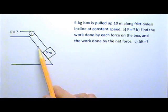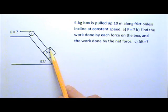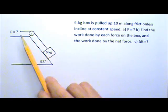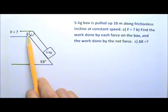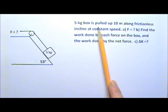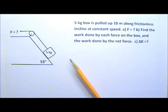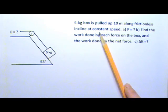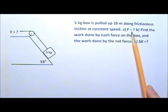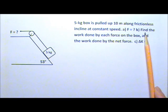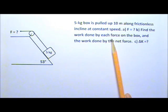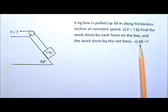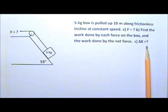In this problem we have a 53-degree incline and a 5 kg box attached to a string. The string goes over a pulley and there's a horizontal force pulling on the string. The 5 kg box is pulled up the frictionless incline by 10 meters at a constant speed. We're looking for the pulling force, the work done by each force acting on the box, the work done by the net force, and the change in kinetic energy of the box.